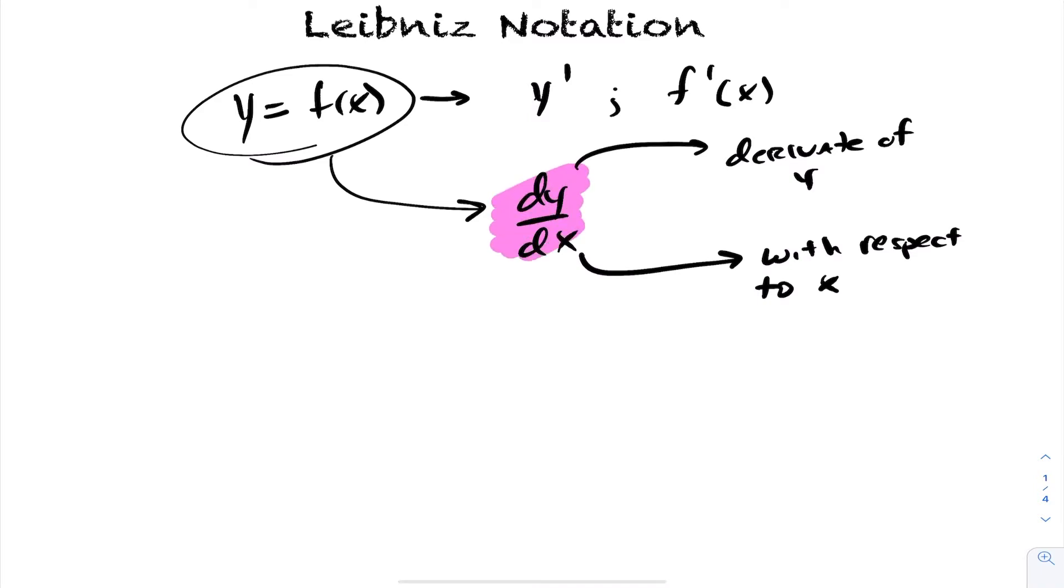So dy/dx is your Leibniz notation—this is the derivative of y with respect to x. We'll come back to this idea of 'with respect to' in further lessons. But for now, given a function y equals f(x), you can express the derivative as y prime, f prime at x, or the generalized form dy/dx.